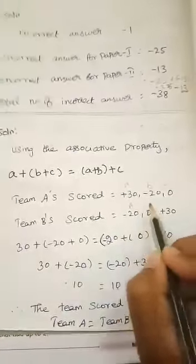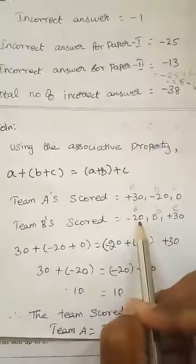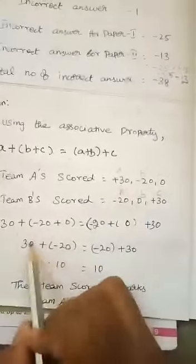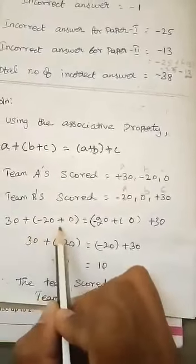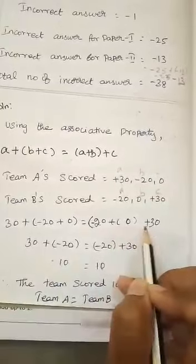We are going to, this is the left hand side, this is the right hand side. 30 plus minus 20 plus 0 is equal to minus 20 plus 0 plus 30.